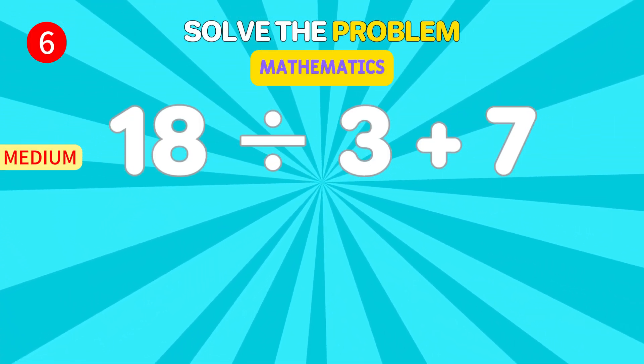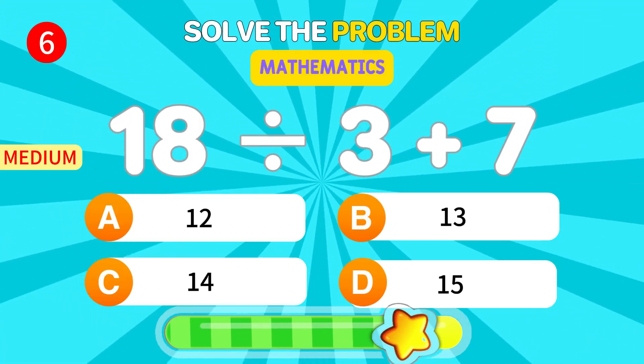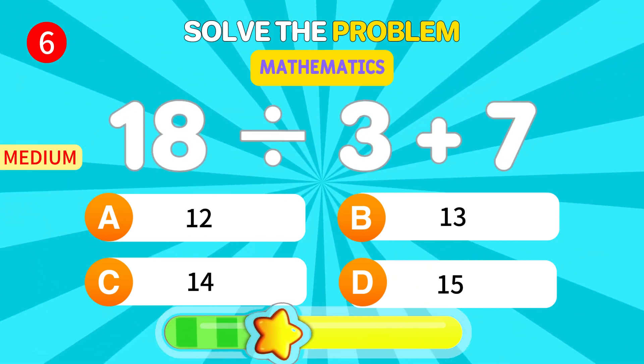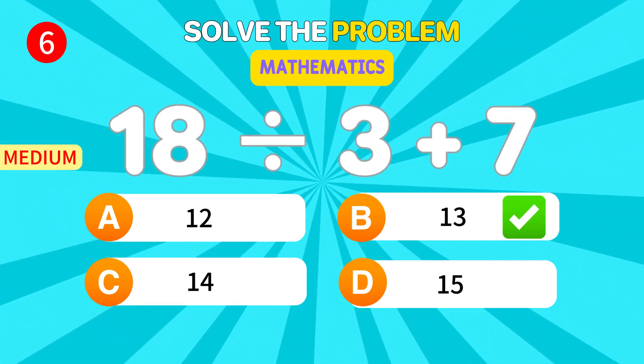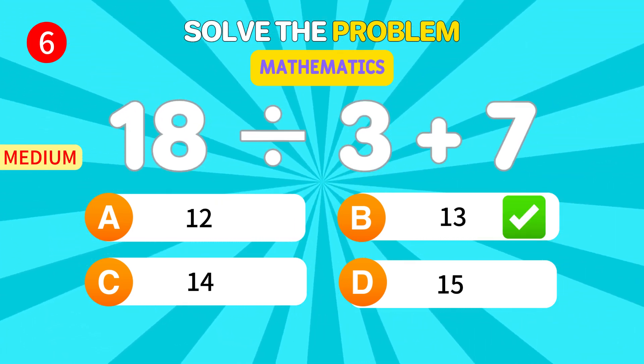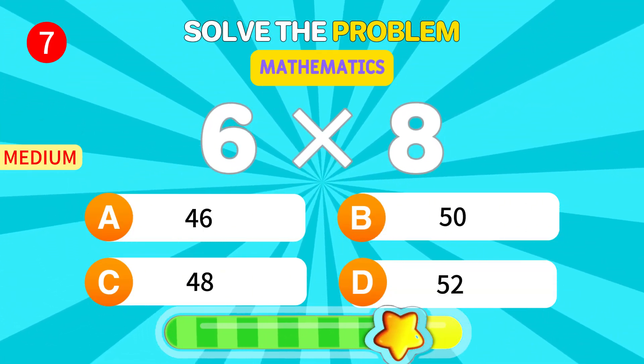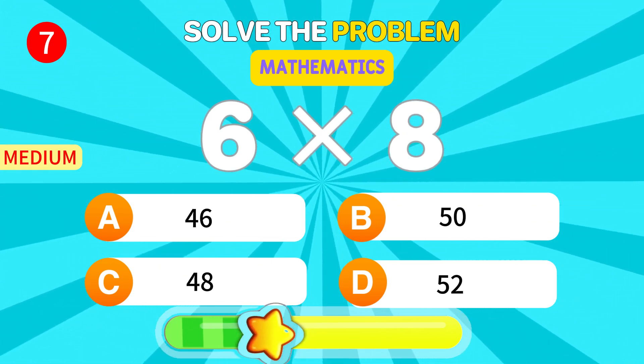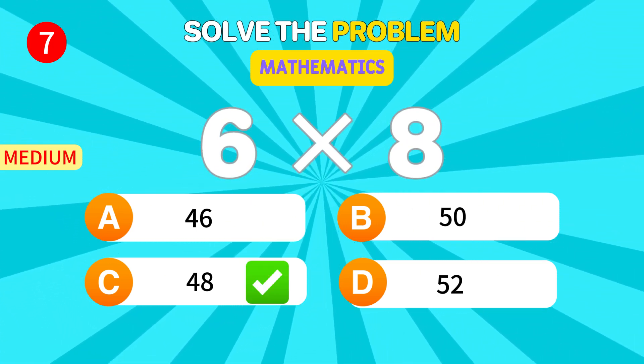Solve this. 18 divided by 3 plus 7. 13. Excellent thinking. What's 6 times 8? 48. You're sharp.